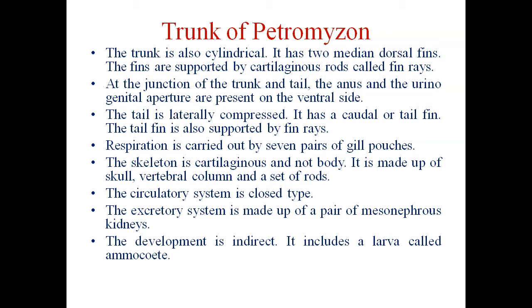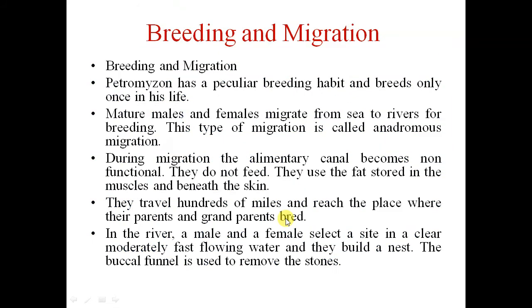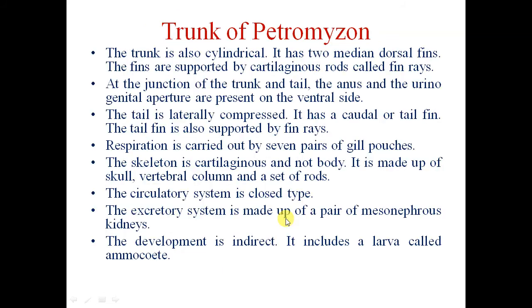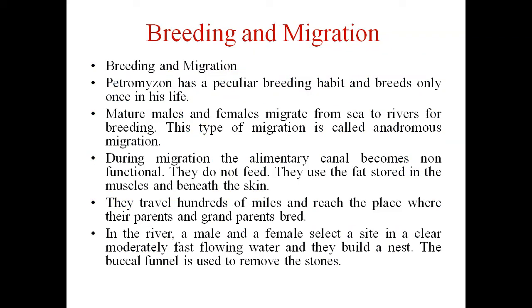Respiration is carried out by seven pairs of gill pouches. The skeleton is cartilaginous and not bony; it is made up of skull, vertebral column, and a set of rods. The circulatory system is of closed type. The excretory system is made up of a pair of mesonephric kidneys. Development is indirect and includes a larva called Ammocoetes larva.